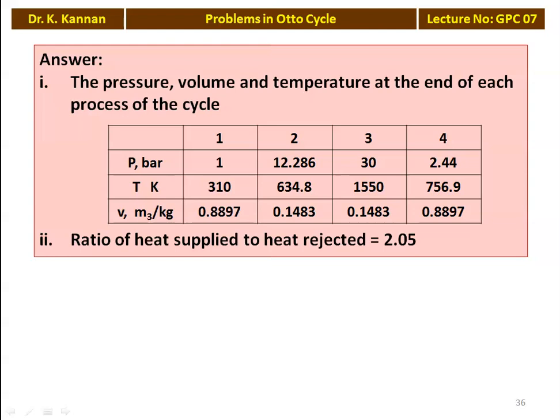Summary of results: Pressures — P1 = 1 bar, P2 = 12.286 bar, P3 = 30 bar, P4 = 2.44 bar. Temperatures — T1 = 310 K, T2 = 634.8 K, T3 = 1550 K, T4 = 756.9 K. Volumes — V1 = V4 = 0.8897 m³/kg, V2 = V3 = 0.1483 m³/kg. The ratio of heat supplied to heat rejected is 2.05.